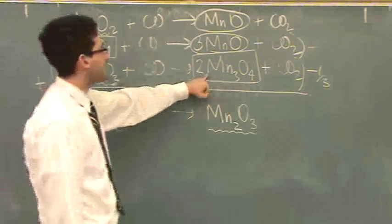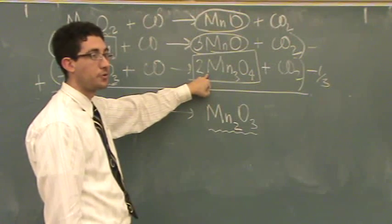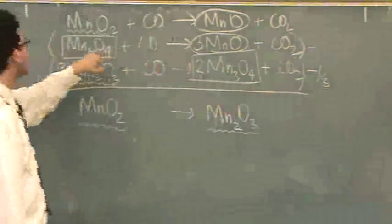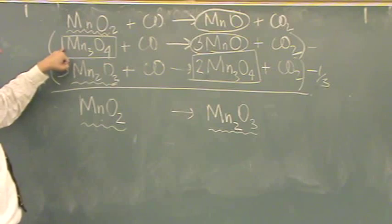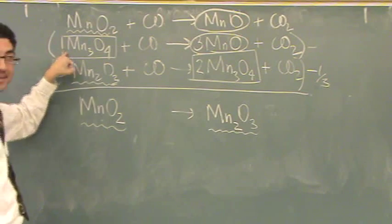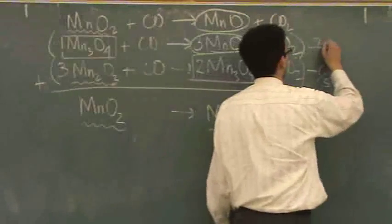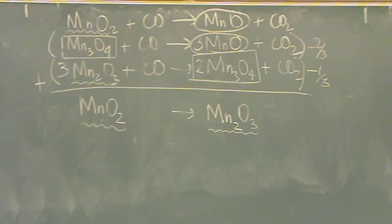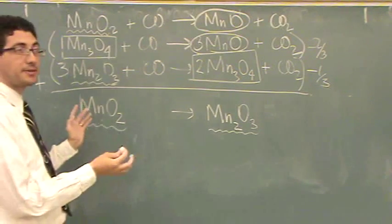Minus. And, how many of these do I have? Two-thirds. Remember that. And, so I need two-thirds of these, so they cancel. Okay? Done with the second reaction.